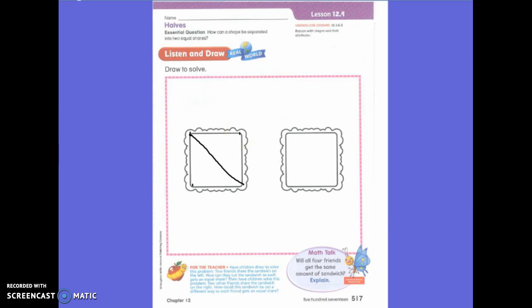You are exactly right. How many equal shares did this sandwich make when I cut it? Two. It made two equal shares. You are exactly right. One, two. Two equal shares.